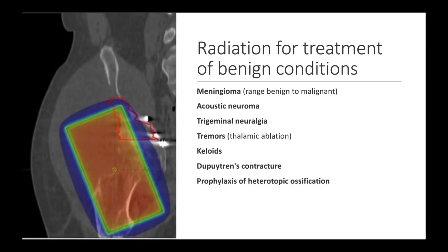Radiation can also be used to treat several benign conditions. Some examples include meningioma, which can range from benign to malignant, acoustic neuroma, trigeminal neuralgia, thalamic ablation to treat tremors, keloids, Dupuytren's contracture, and we can also give radiation to prevent the formation of heterotopic ossification. Other examples include osteoarthritis or to help clear cardiac narrowing that's refractory to drug-eluting stents.